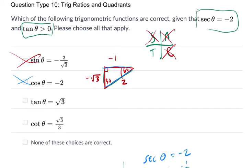The tangent of theta is radical 3. Let's see that. That's opposite over adjacent. So that's negative square root of 3 over negative 1. And that is the square root of 3.